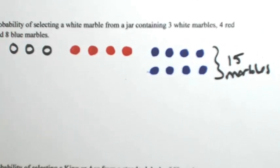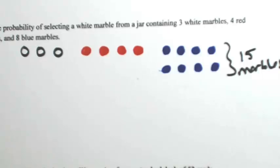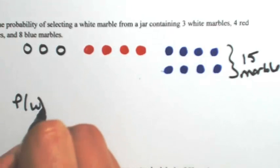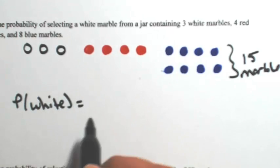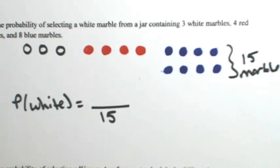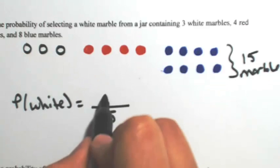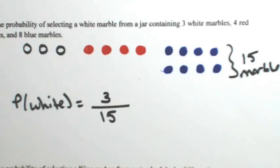The number in our sample space is fifteen. Now we answer the question, what's the probability of selecting a white marble? Out of fifteen marbles, how many could be white? We got one, two, three of them. So three out of fifteen.